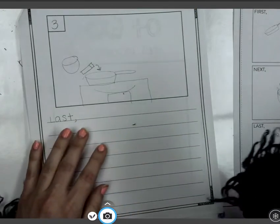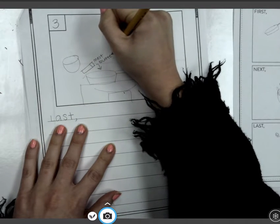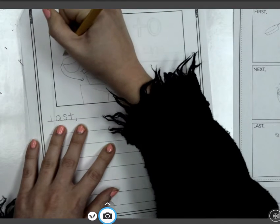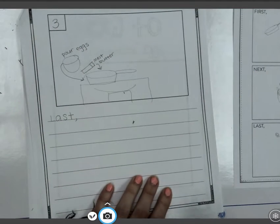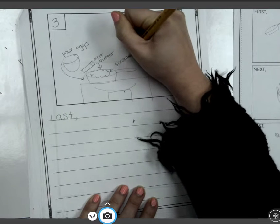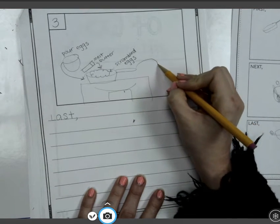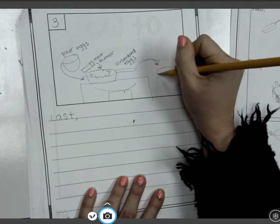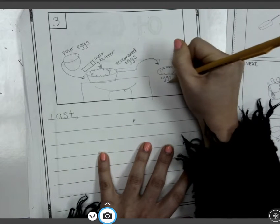I'm still going to use some arrows just to help my reader know exactly what to do. So melt butter, and I'm going to pour in eggs. And then I'm going to draw the scrambled eggs in my pan. So I'll label that scrambled eggs. And then I'm going to do one more arrow, and that's when I put my scrambled eggs on my plate. So I'll put eggs on plate.